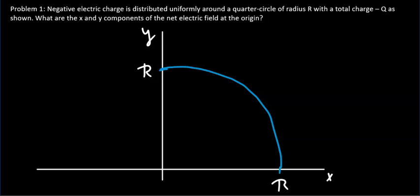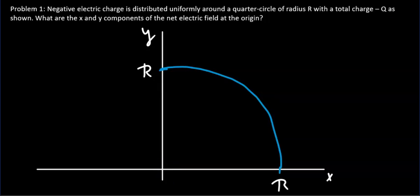Negative charge is distributed uniformly around a quarter circle with radius r, and the total charge distributed is minus Q — so we are dealing with a negative charge. What are the x and y components of the net electric field created by this charge distribution at the origin? Note that this is a quarter circle centered at the origin. The first step is to divide the entire charge distribution into very small segments.